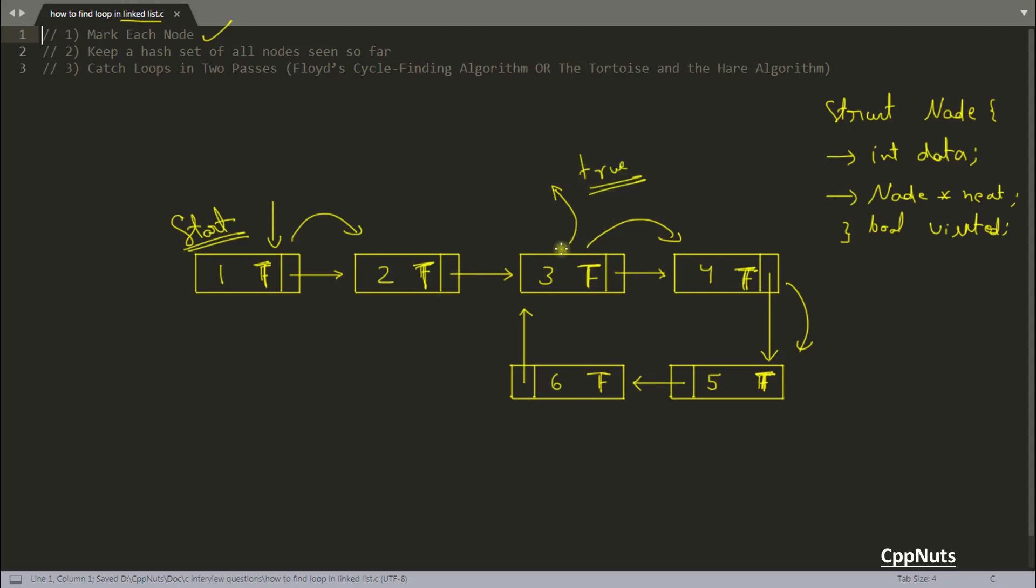This was the first way of doing this. The drawback of this one is you have to have this extra field. If it is C++ you can have this as a boolean, and if it is only C you can go for character visited and you can initialize zero and one in that. This mark each node way requires extra space in each and every node. So you will be losing one, one, one, one, one, one, and one - total six bytes in order to find the loop in your linked list. So this is not the best way to find the loop in the linked list.